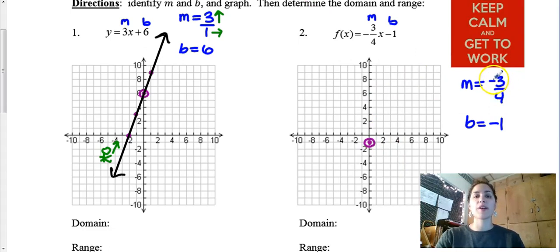And now we need to use our slope to count our way to the next ordered pair. Again in the numerator for slope that is our vertical change. So if I see a negative 3 that means down 3 and then 4 is positive so that's right.